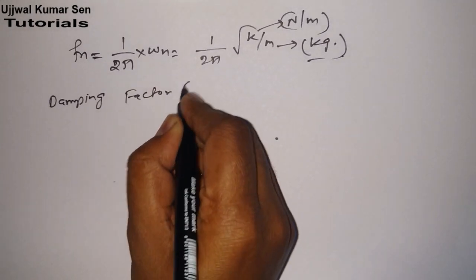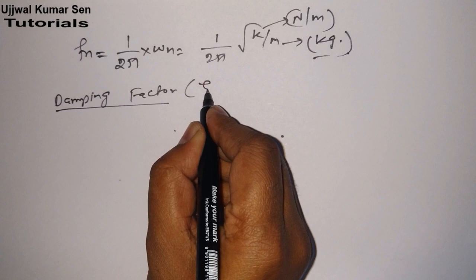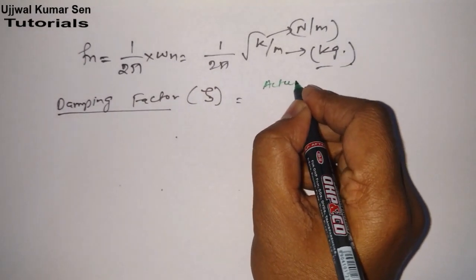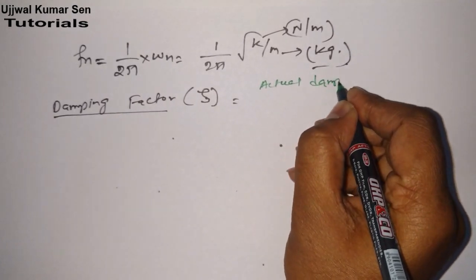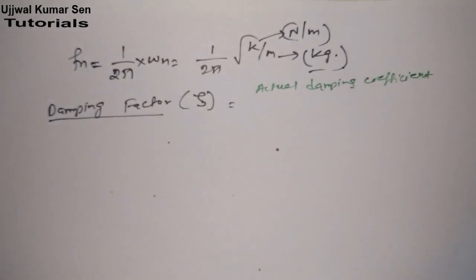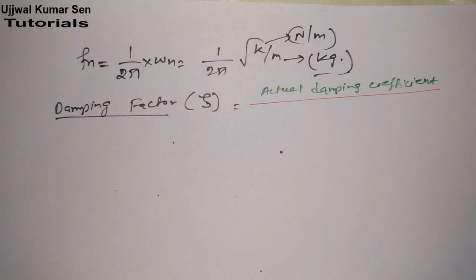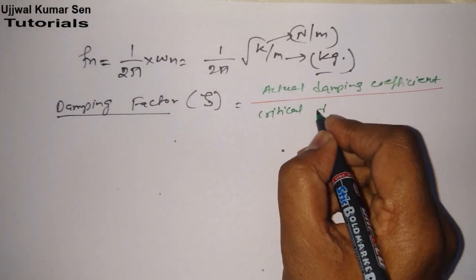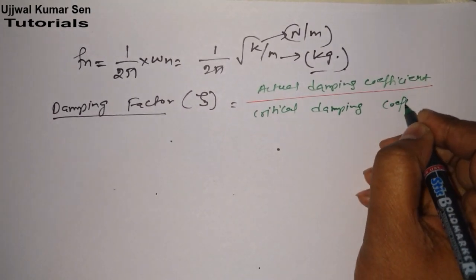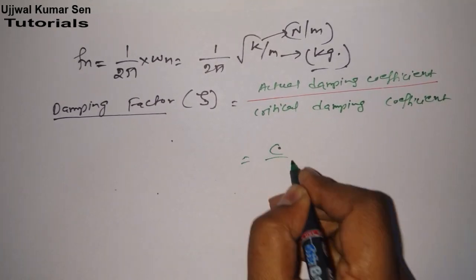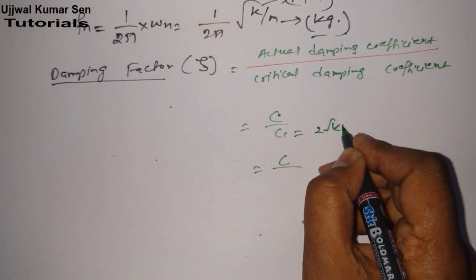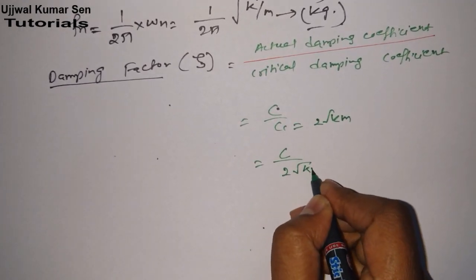Let's go for the next important thing — damping factor. This damping factor is denoted by zeta (ζ), and zeta is known as the actual damping coefficient divided by the critical damping coefficient. So ζ = c/cc, and cc is equal to 2√(km). This is the damping factor.